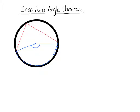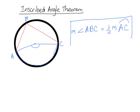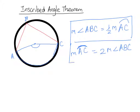So if we label points A, B, C, then the measure of angle ABC will be half the measure of intercepted arc AC. We can also say it the other way: the arc is always going to be twice the measure of the inscribed angle ABC. These two statements are the same thing, just said in two different ways. And that's our inscribed angle theorem.